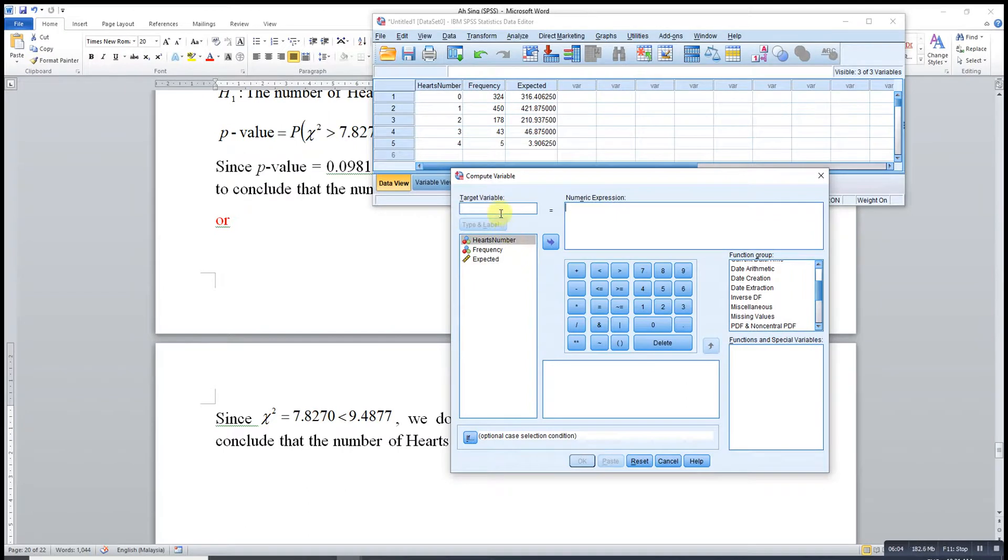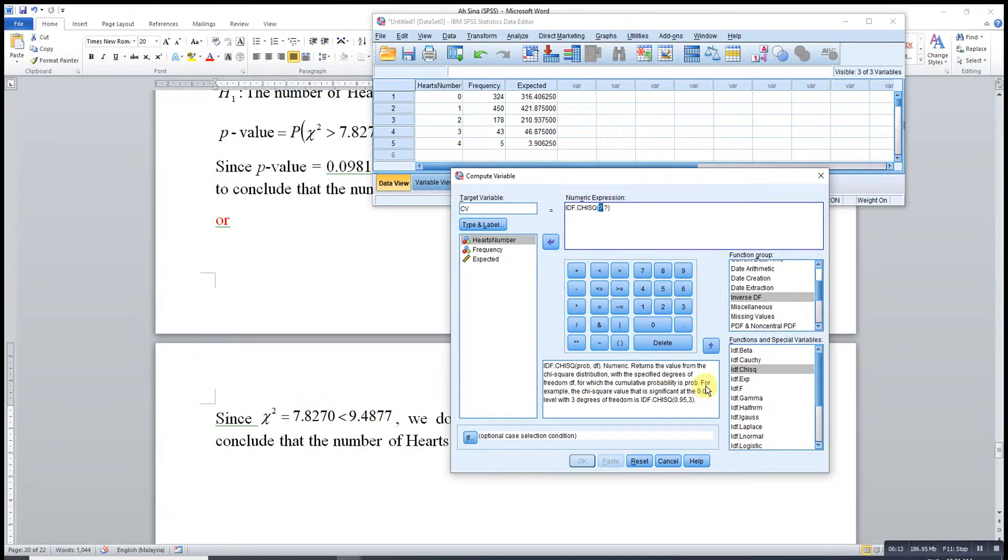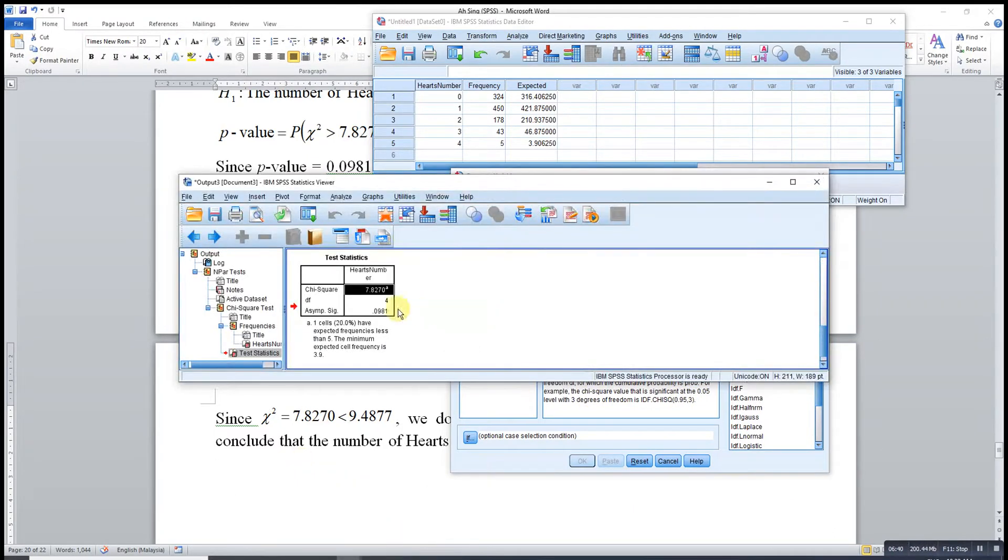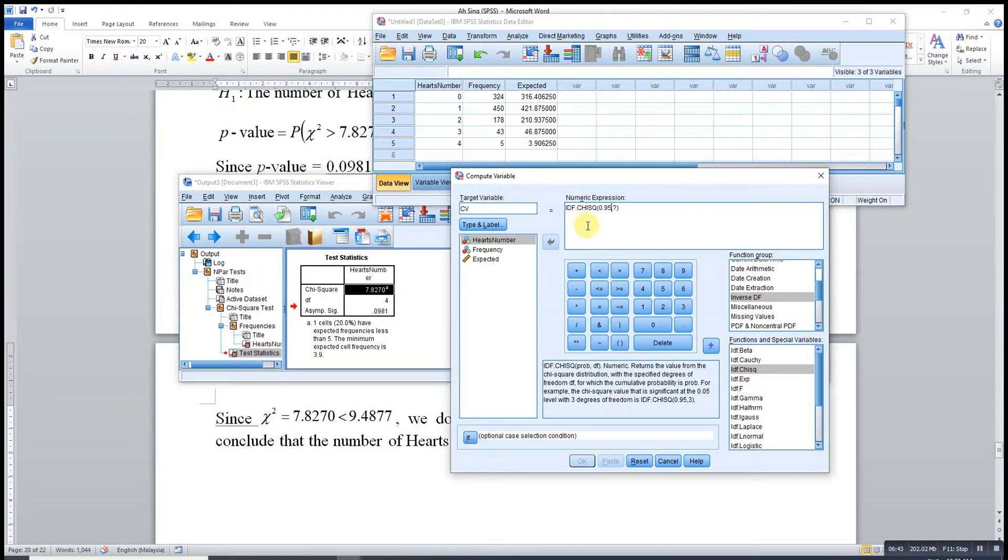Then critical value. Reset. We will look for inverse CDF of chi-square. For example, the chi-square value that is significant at the 0.05 level with 4 degrees of freedom. If we want to test at 0.05 significance level, we should input 0.95. And the degree of freedom we can refer to the result that we obtained, which is 4. Then click OK.